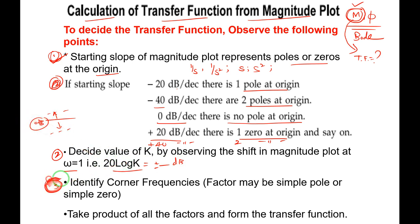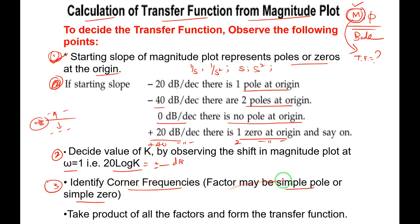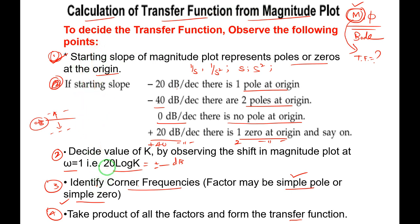Corner frequencies arise whenever we have a simple pole or zero of the form (1 + Ts). Identifying corner frequencies tells us the simple poles and zeros. Finally, take the product of all the factors — K, poles/zeros at origin, and simple poles/zeros — to form the transfer function. These are the steps we'll follow and we'll solve a numerical example.